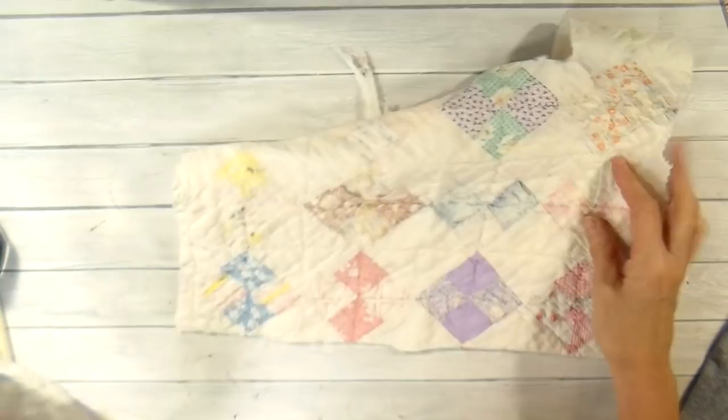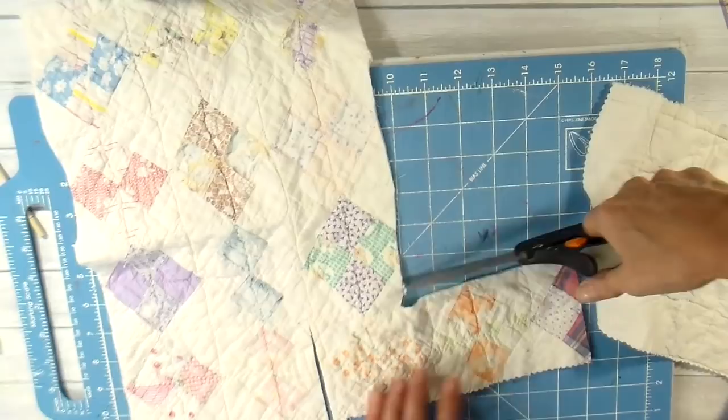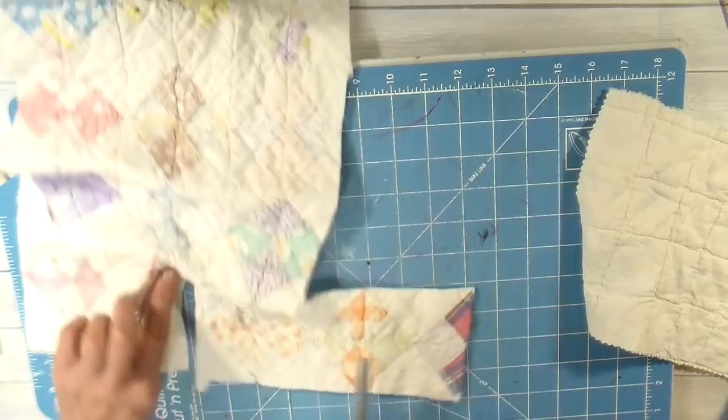The fabric that I'm using is this old quilt that I picked up at a flea market. It has a lot of holes in it, so I had to work around some of that, but there was a little piece here and that's the one I ended up going with. I really liked the size that this turned out.